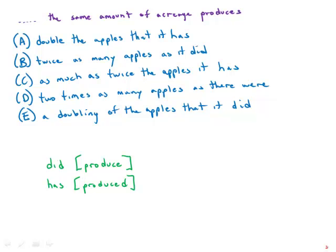Did produce, this is simple past tense, something that happened at a fixed time in the past. So, did produce in 1910.